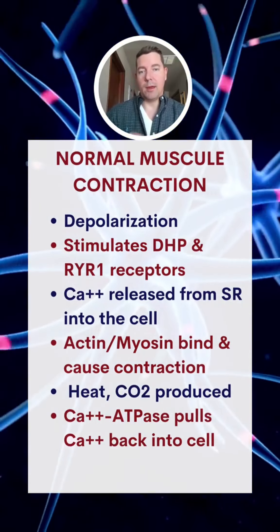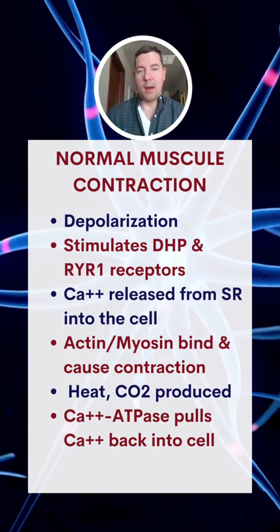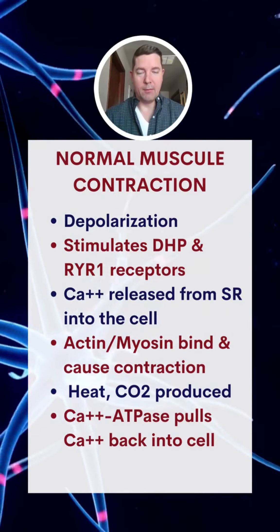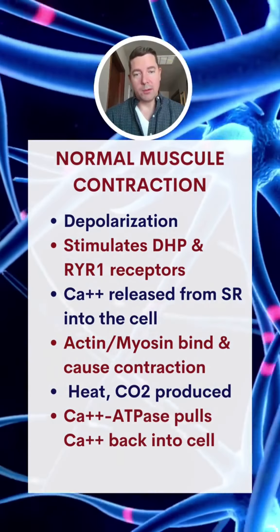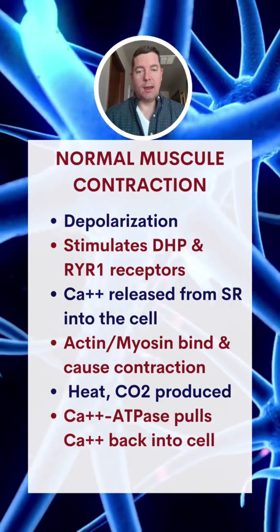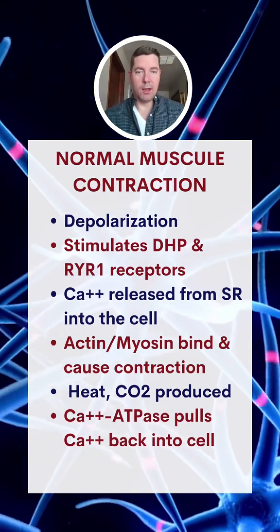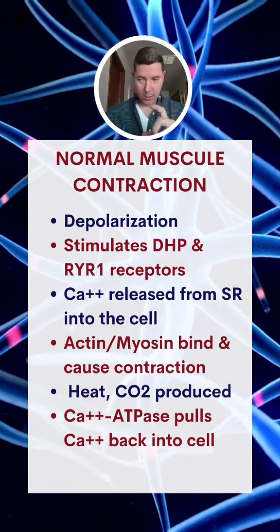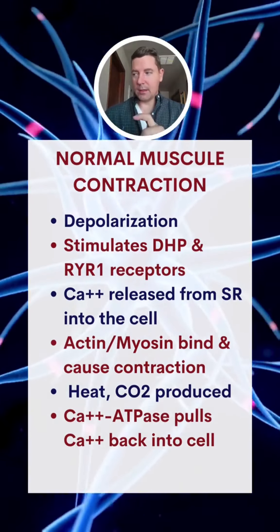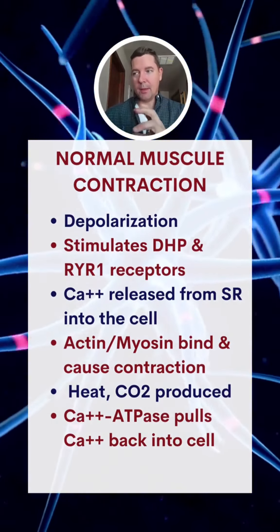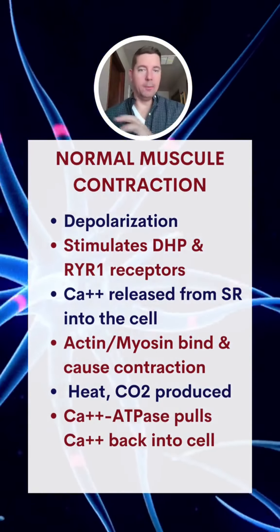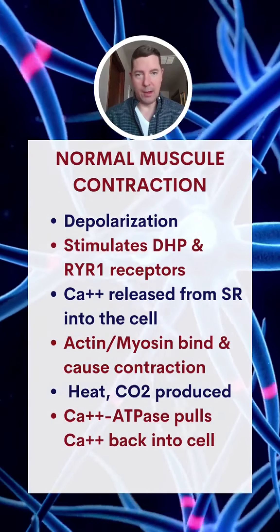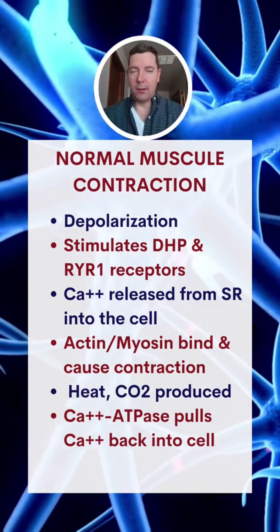Once that calcium bond is broken with actin-myosin, more heat is also created from that reaction. Muscles contract, and then this calcium ATPase receptor — basically an intracellular pump — pulls calcium back into the sarcoplasmic reticulum, stabilizing everything. That is normal.